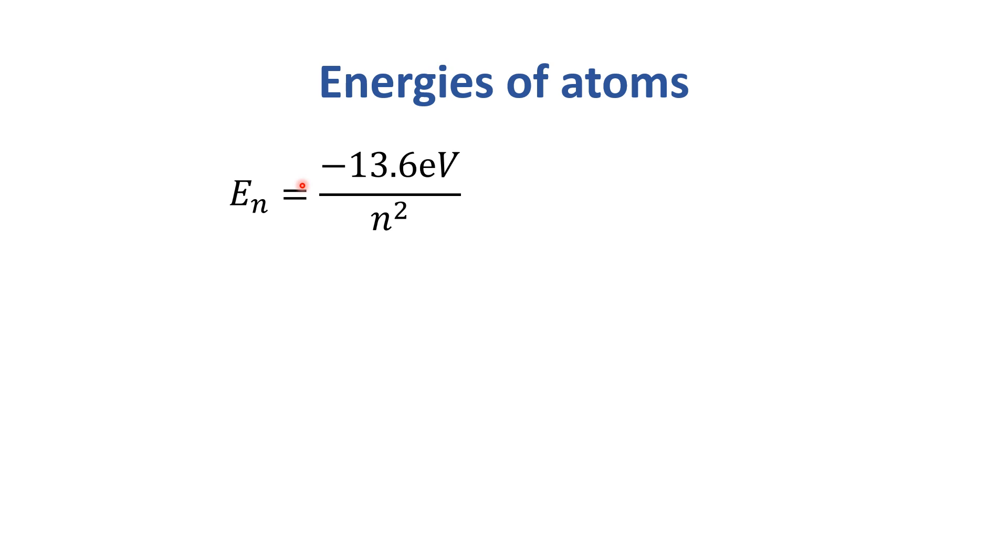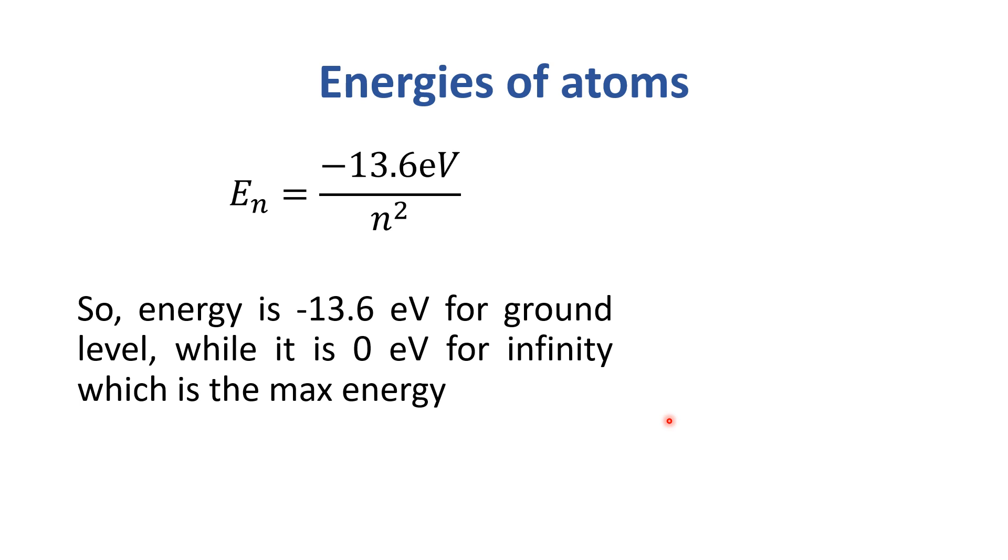And maximum energy is at infinity. And at infinity, the value is 0, which is the maximum value. So, the negative value keeps on increasing in successive shells. And maximum value is 0. So, ground level energy is minus 13.6 electron volts. And infinity is 0 electron volts, which is maximum energy.